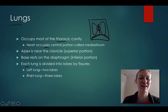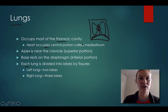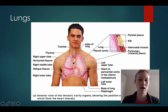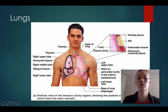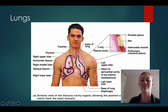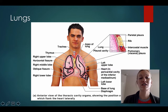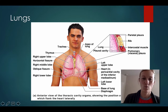Each lung is divided into lobes by fissures. The left lung has two lobes and the right lung has three lobes. Looking at the picture, the right lung has lobe one, lobe two, and a third one, whereas the left lung only has two lobes. The reason the lobes differ is because the heart is situated a little bit towards the left side of your body, which decreases the space available on the left side — that's where we get that two and three lobe difference.